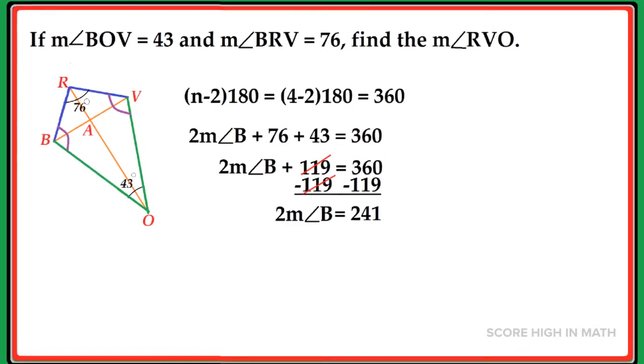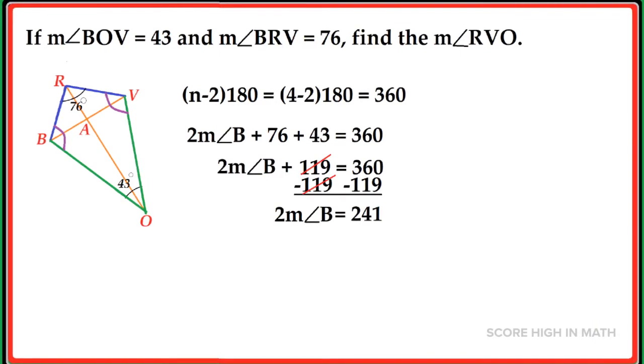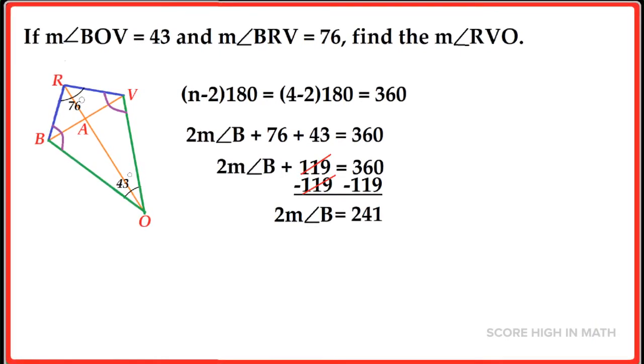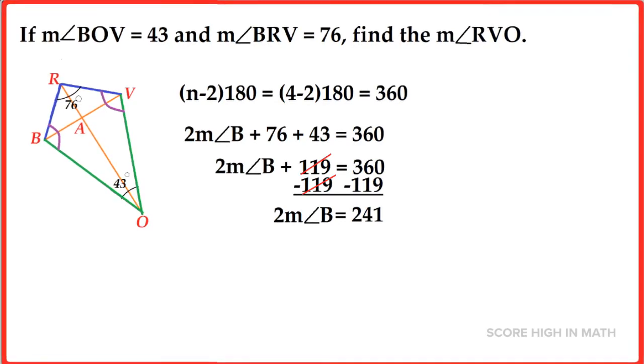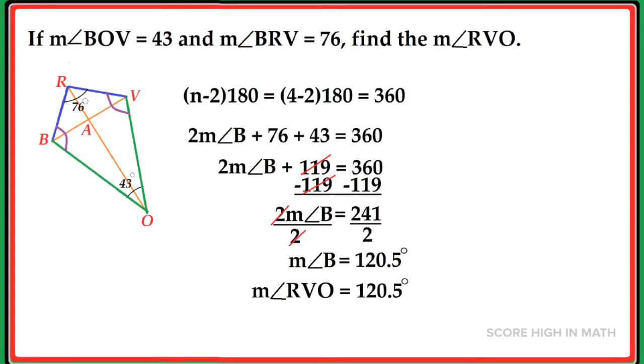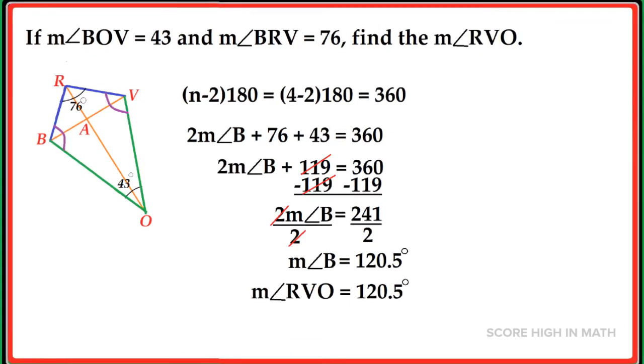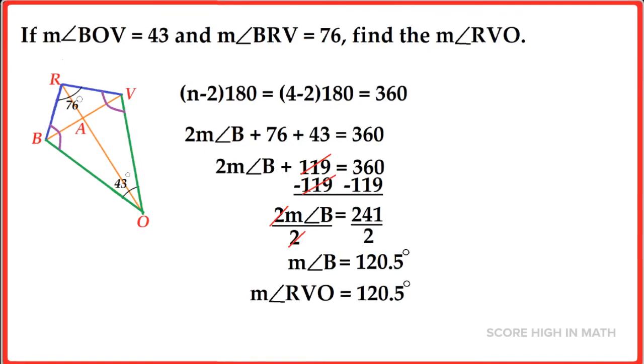To eliminate 119 on the left side, you are going to subtract 119 on both sides, and it will give us 2 times the measure of angle B is equal to 241. So the measure of angle V, which is also equivalent to the measure of angle RVO, is equal to 120.5 degrees.